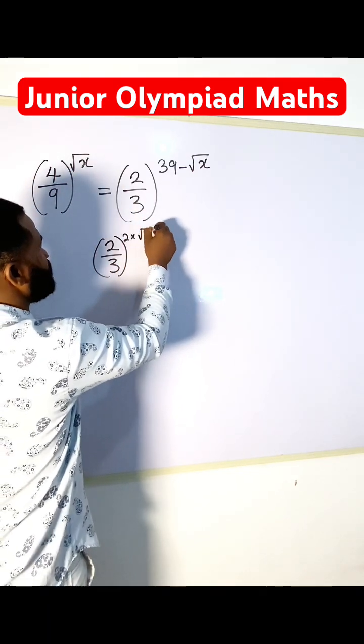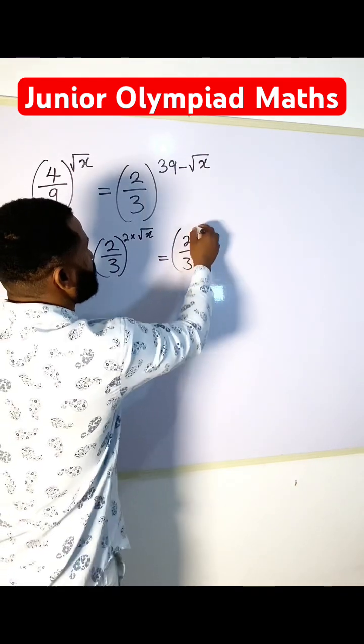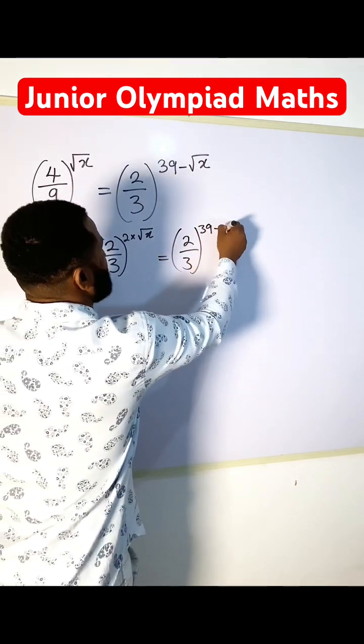so I'm going to multiply by root x, and this is going to be 2 over 3 raised to the power 39 minus root x.